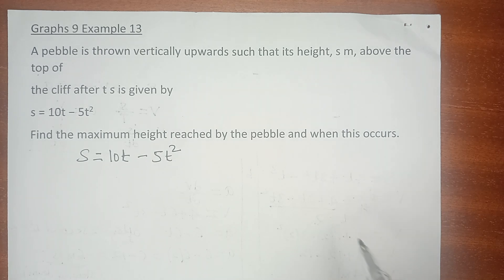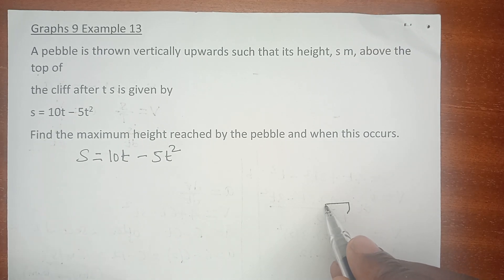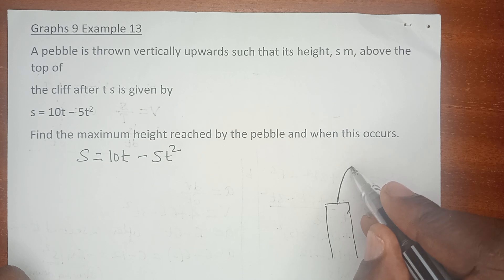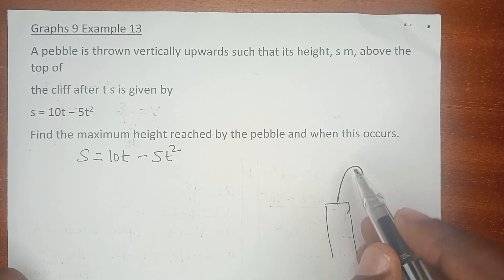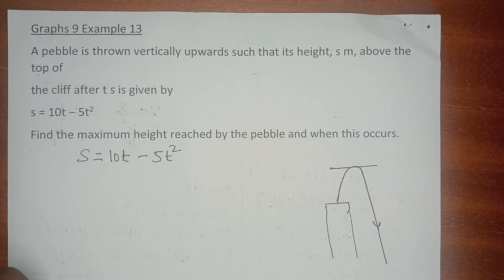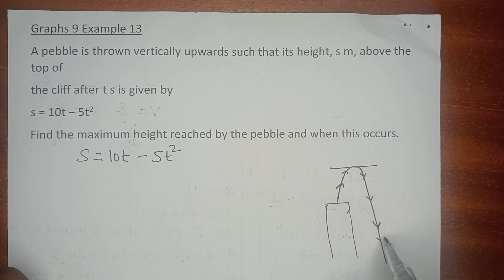We are having a practical activity here. This could actually be our cliff and the pebble is thrown above the cliff. Due to gravity it will first go up because it is thrown up, and after reaching the maximum height it drops down to the ground. That is the maximum point and this is how we can describe the movement of that pebble.